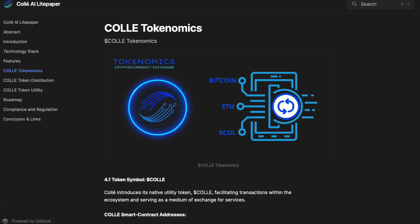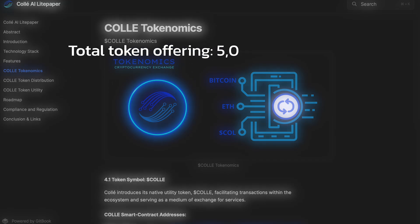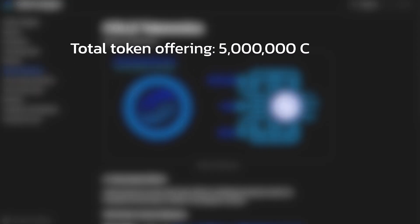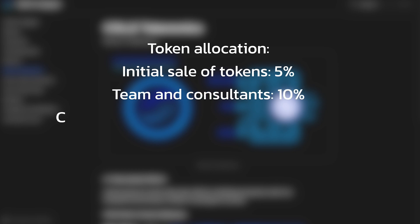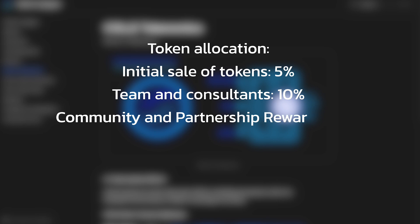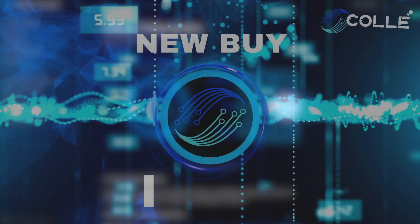Tokenomics. Token symbol: Kole. Total token offering: 5 million Kole. Token allocation — initial sale of tokens: 5 percent; team and consultants: 10 percent; community and partnership rewards: 50 percent; reserve fund: 35 percent.